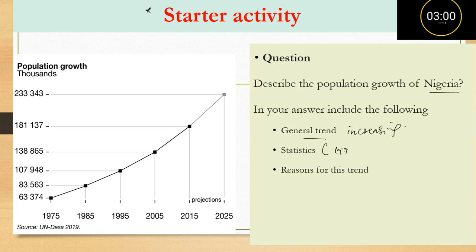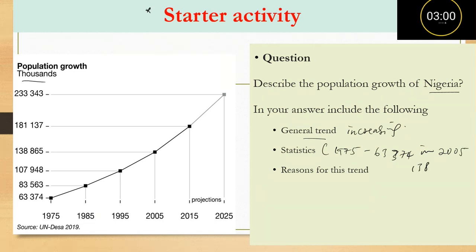In 1975, the population of Nigeria was around 63,374 thousand. Using the key provided, by 2005 the population had increased to around 138,865 thousand. The last part of the question asks for reasons for this trend — why has the population continued to increase?